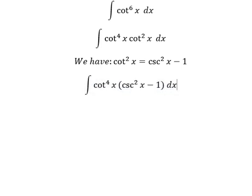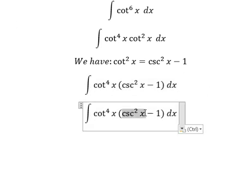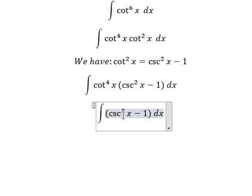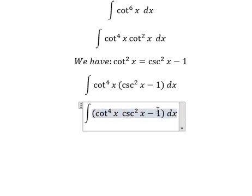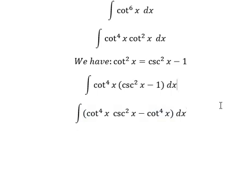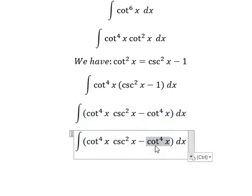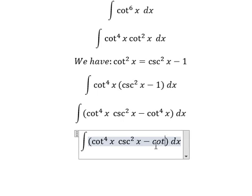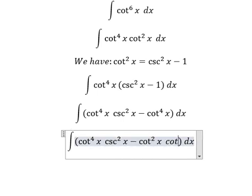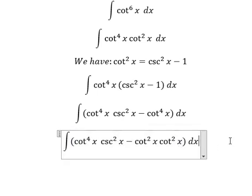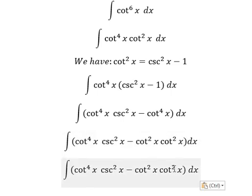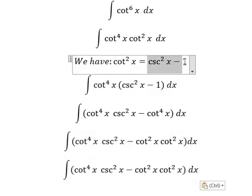And now cotangent x to the power of four multiply by this one and this one. Next, this one we can put cotangent squared x and cotangent squared x. So this one we change by this one.